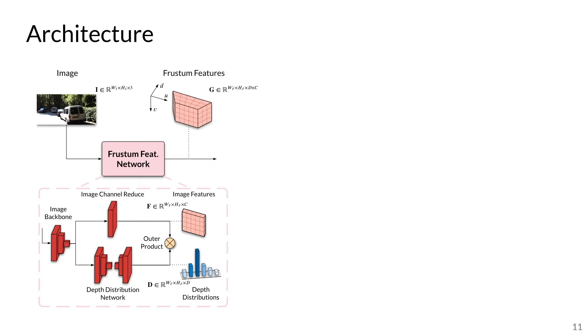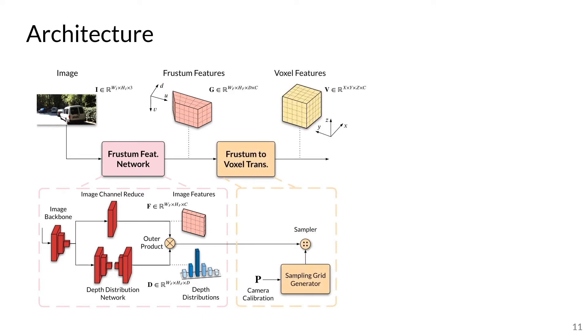The frustum features G are then transformed into a voxel representation V. Sampling points in each voxel are projected into the frustum grid using the camera calibration matrix. The frustum features are then sampled using the sampling points, in order to populate each voxel feature.